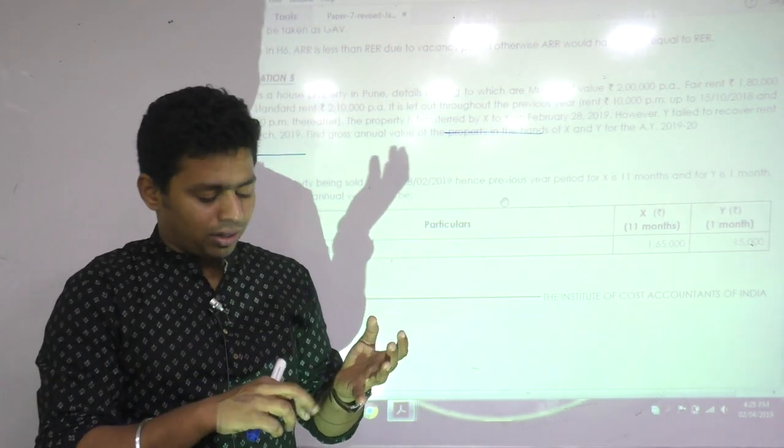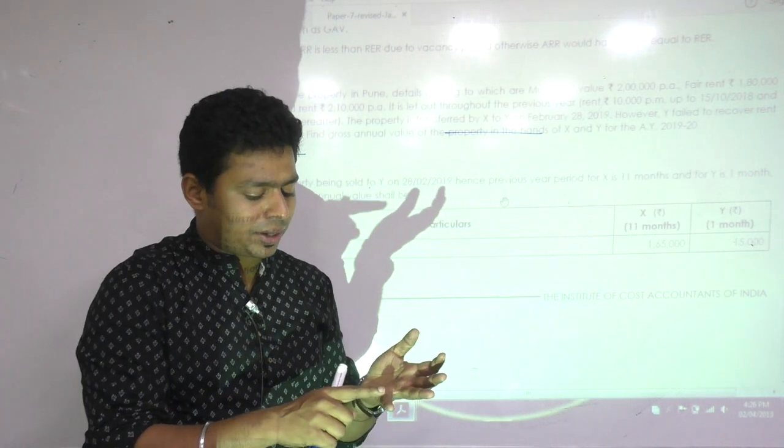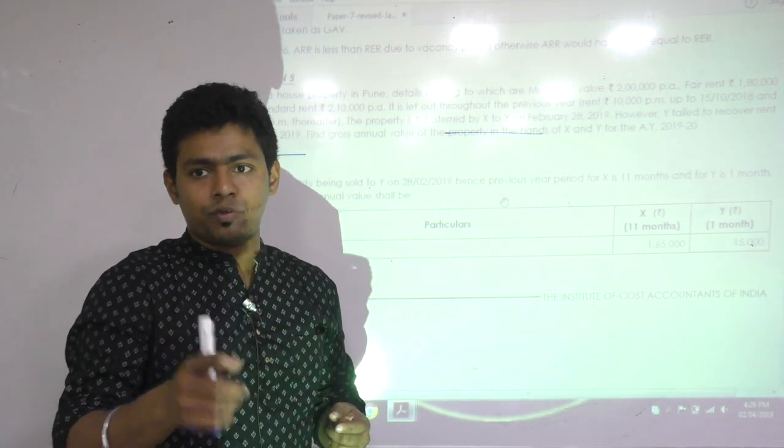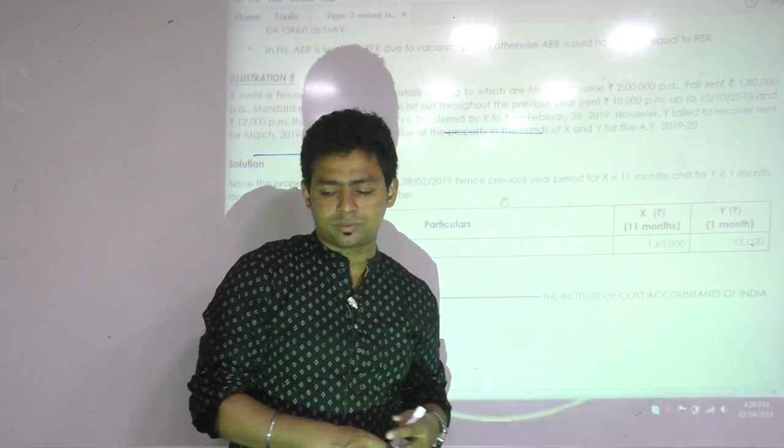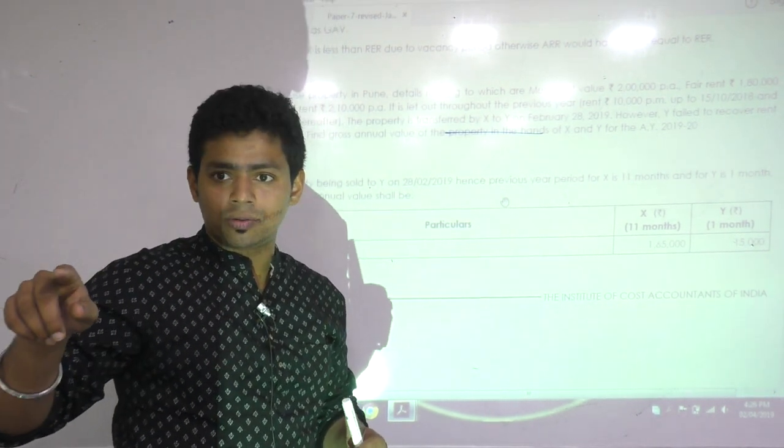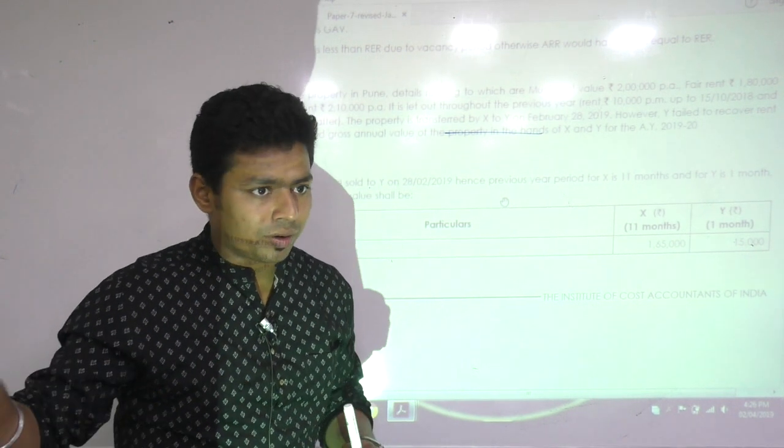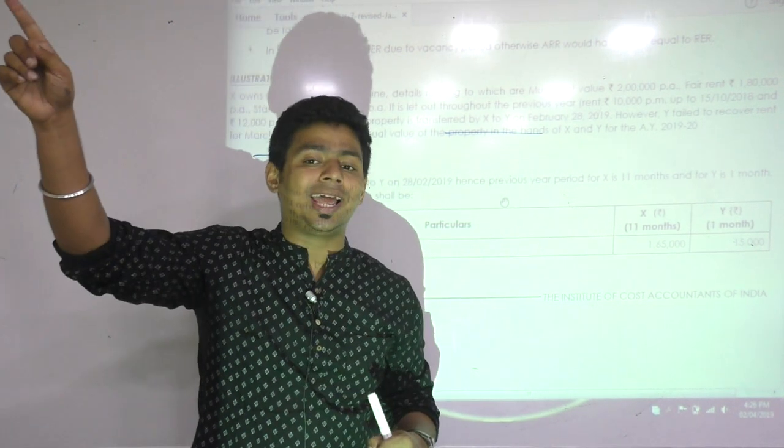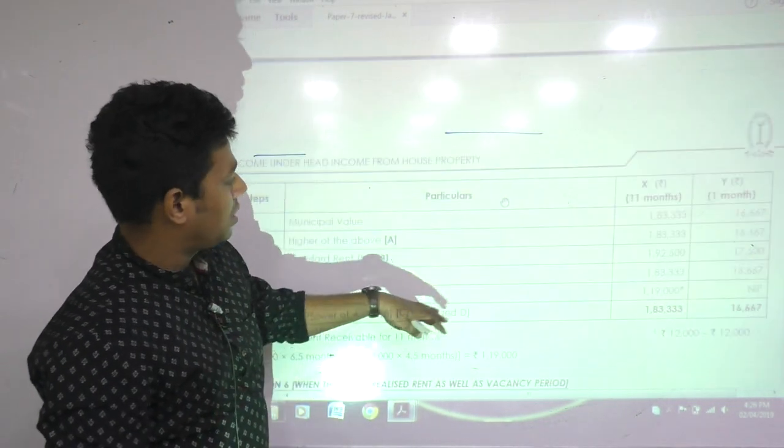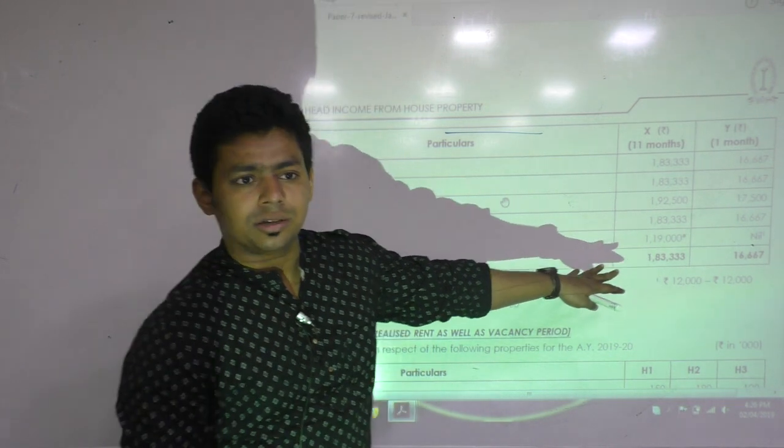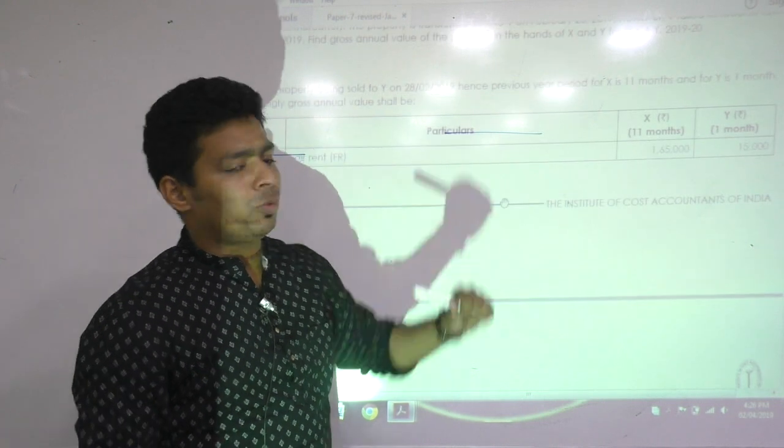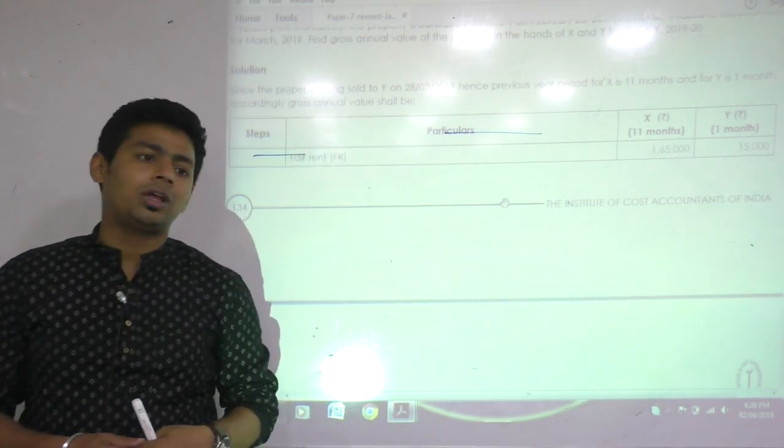60,000 plus 11,000 is 71,000. Then after that 12,000 for November, December, Jan, February - 4 months. 48,000 plus 71,000 is 1,19,000. Your expected rent is 1,83,333. Whichever is higher: 1,83,333. Can you do it at home? Yes sir. Now what do we do in unrealized rent case? What is our actual rent formula?